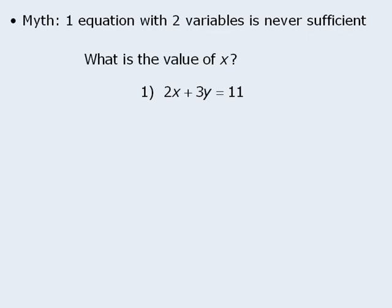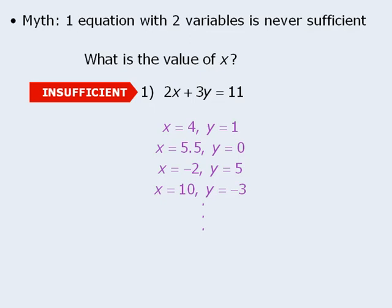Here is an example where the rule does work. In this question, we want to find the value of x. Statement 1 tells us that 2x plus 3y equals 11. Here we have one equation with two variables, and in this particular case, the statement is not sufficient, because there is an infinite number of solutions to the equation. Since this equation has an infinite number of solutions, there is no way to determine the value of x with any certainty. So in this case, one equation with two variables did not provide sufficient information to answer the target question.